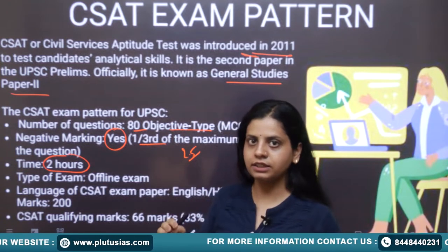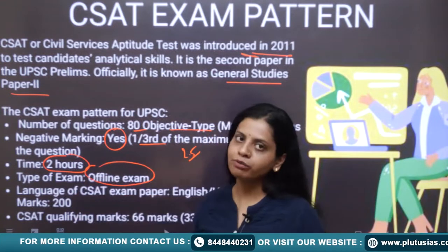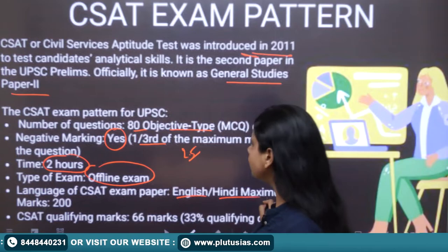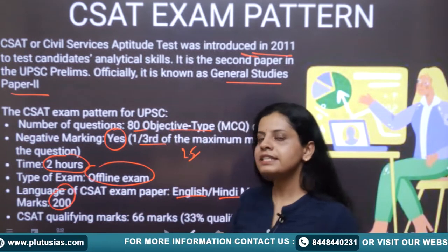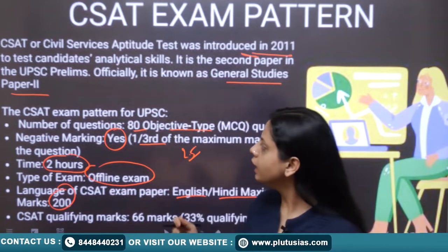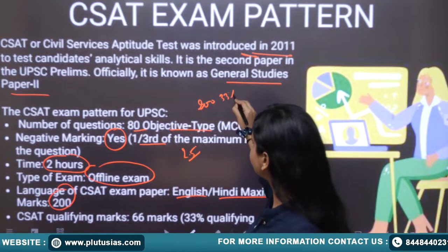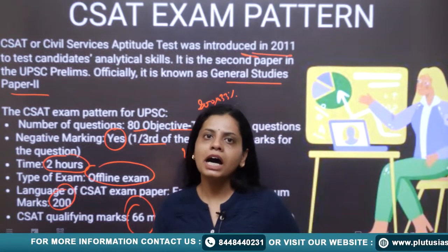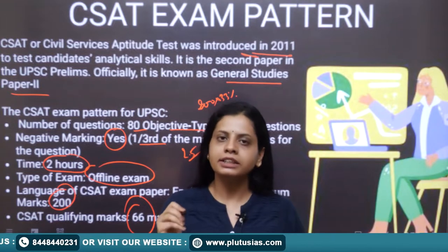This is a separate paper conducted on the same day as GS Paper 1. The exam is conducted offline, and the paper is available in both English and Hindi. Total marks are 200. CSAT is qualifying in nature — you need to secure 33%, which means a minimum of 66 marks out of 200 to qualify.